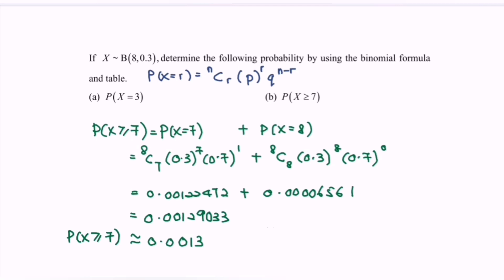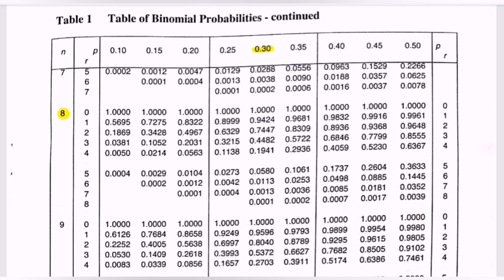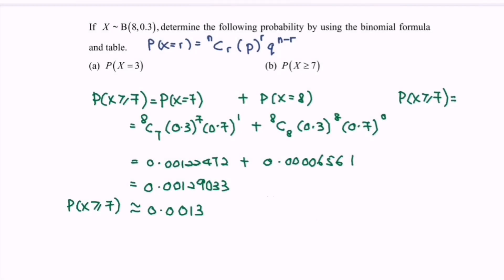Using the table for question b: we look up P(X≥7) directly in the binomial distribution greater-than table, with n=8 and p=0.3. The table gives the value 0.0013 for X greater than or equal to 7. Since the table already represents the greater-than situation, we can straightforwardly read the answer as 0.0013.